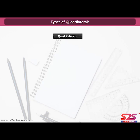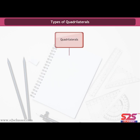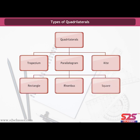Quadrilaterals. Figures with four sides are called quadrilaterals. There are mainly three types of quadrilaterals: trapezium, parallelogram, and kite. Parallelogram is further of three types: rectangle, rhombus, and square.